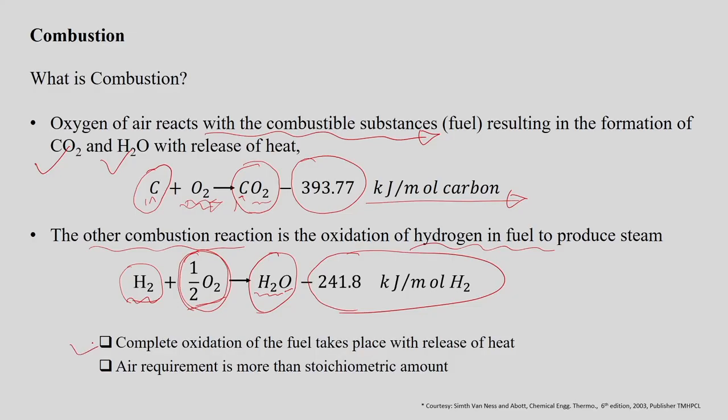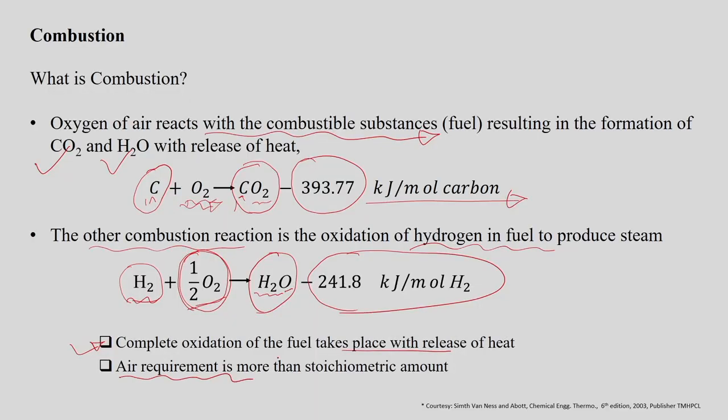For complete combustion of the fuel, significant energy is released. The air requirement is more than the stoichiometric requirement for the oxidation reaction. In practice, the oxygen required may be in excess of the stoichiometric requirement, so the stoichiometric equation needs to be balanced for the actual combustion process to find out how much oxygen is required to allow complete combustion in the combustion chamber.